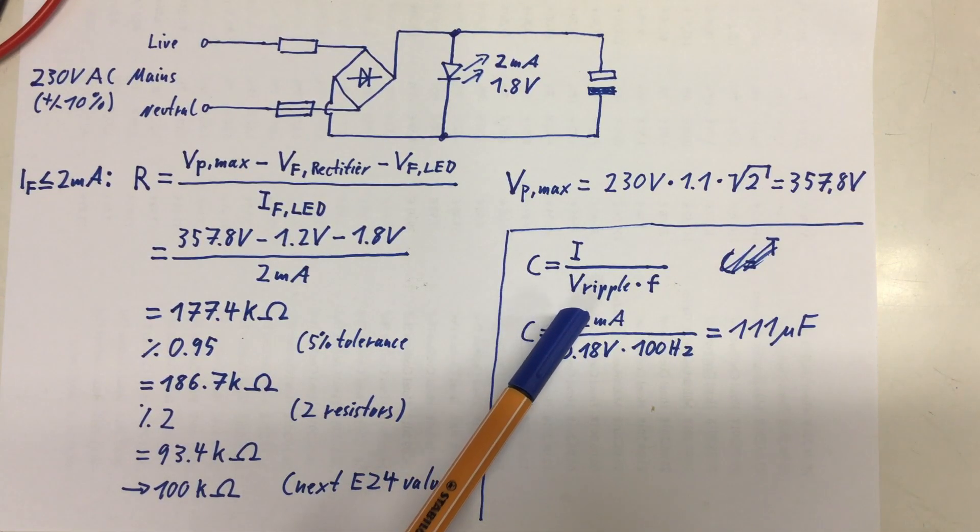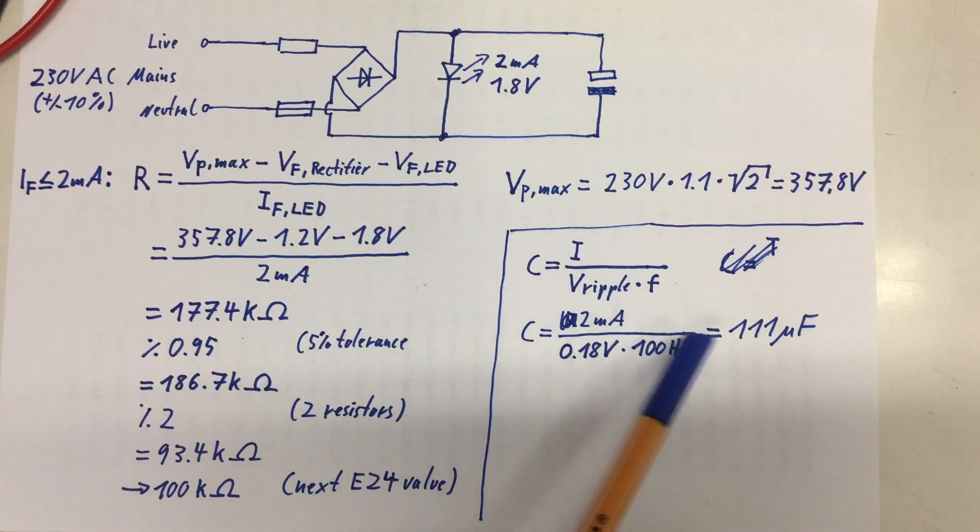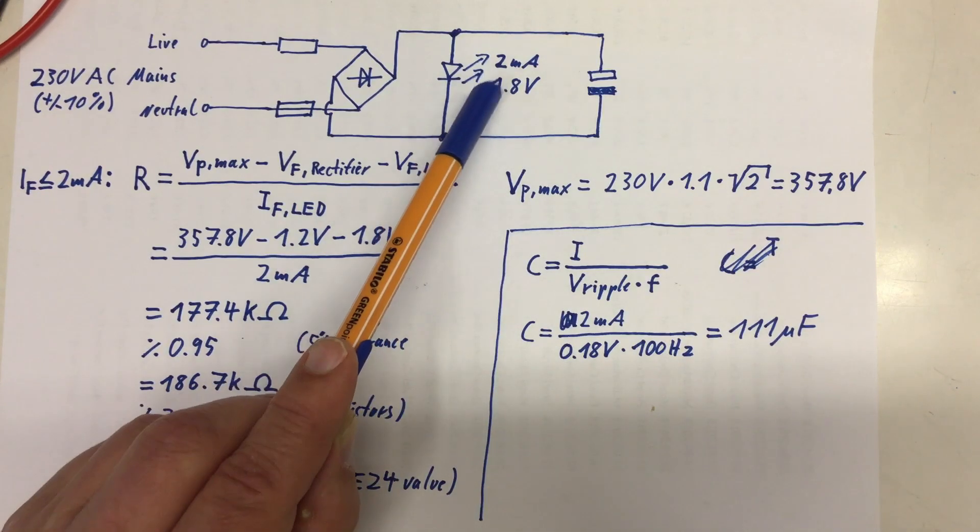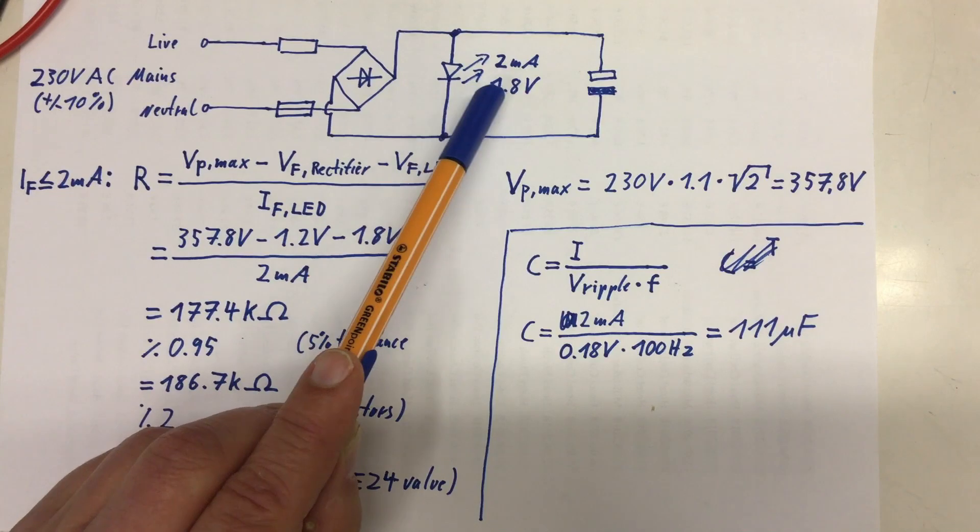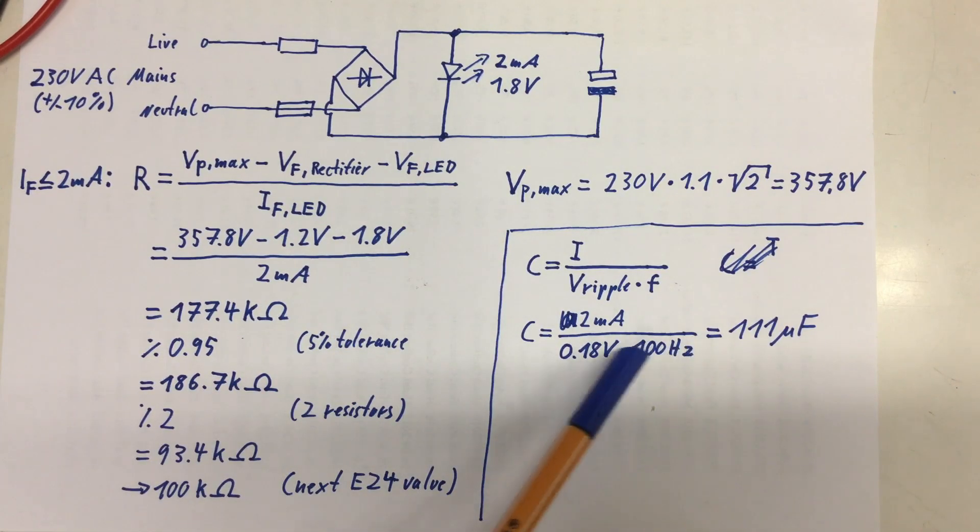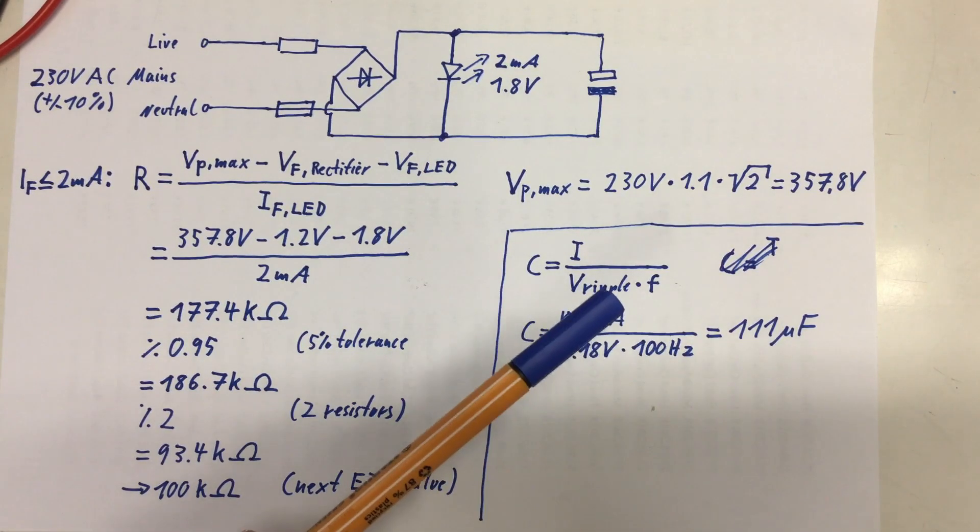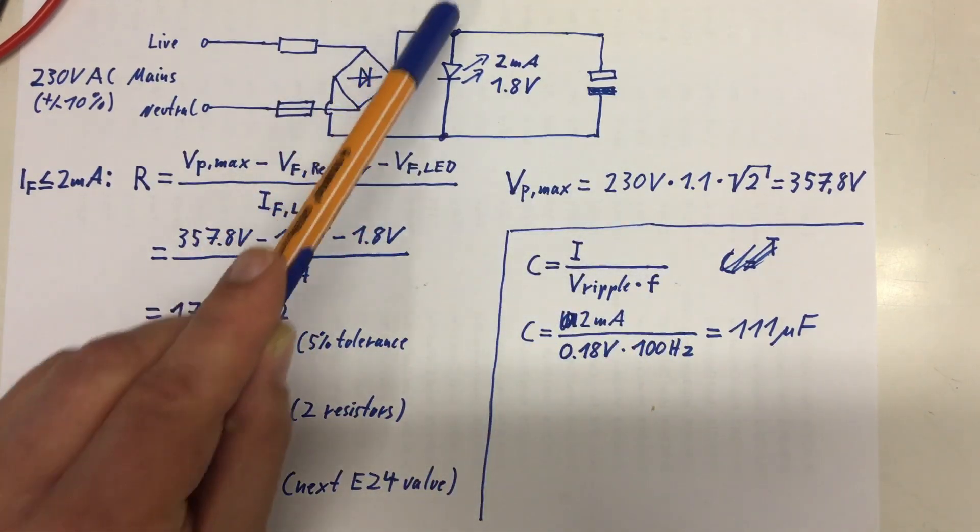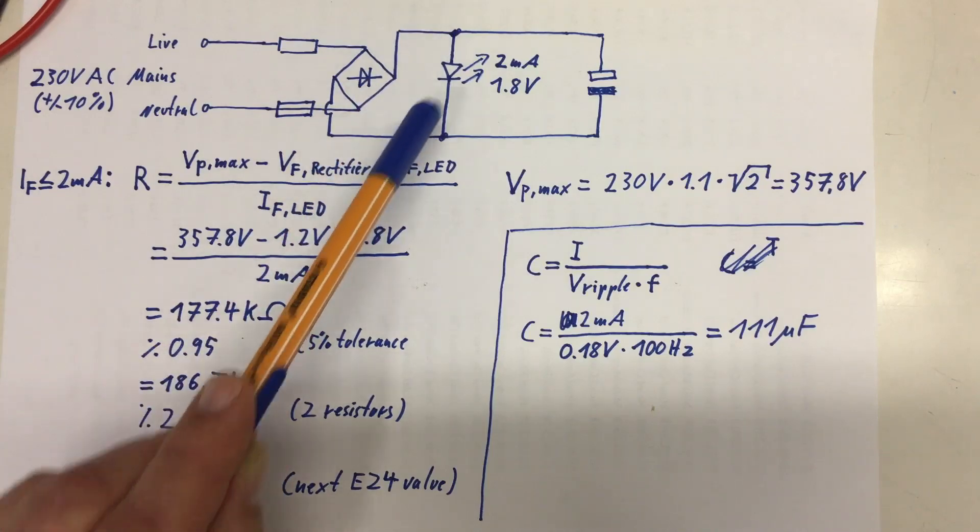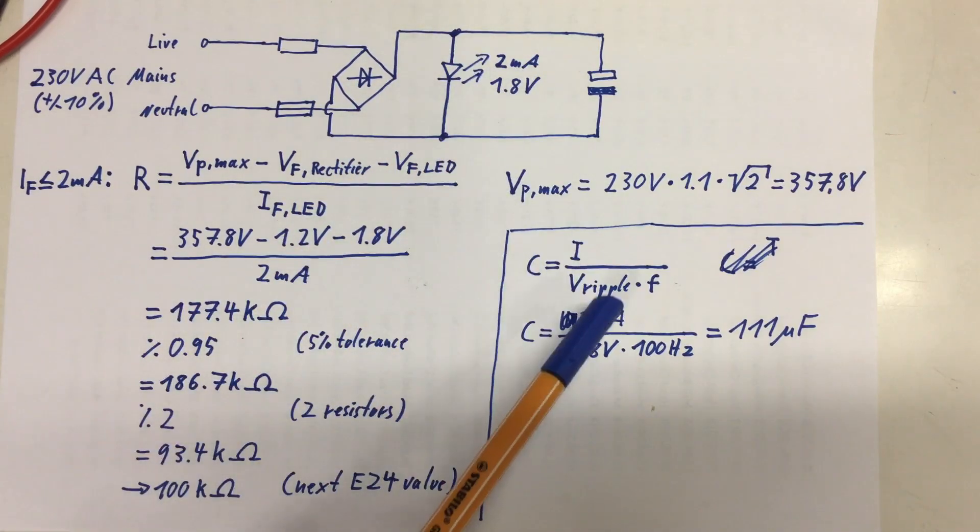Divided by the ripple voltage you are allowing times the frequency. And I go for 2 milliamps again. But our RMS current was 1 milliamp. But maybe we'll want to improve on that. But divided by 0.18 volts, so about 10% of the LED forward voltage, times 100 hertz. We have 50 hertz AC mains here. But we are behind the bridge rectifier. So our waveform has 100 hertz.